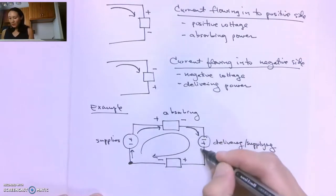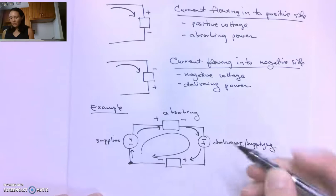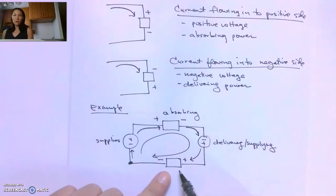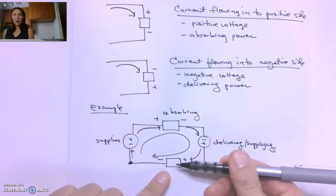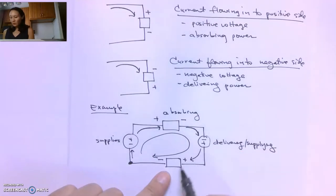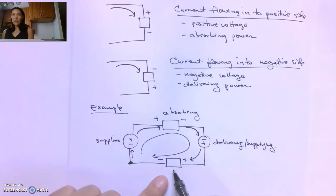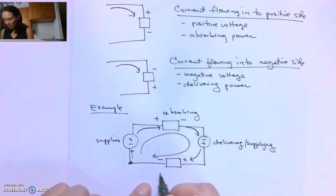Now as we continue on, the last circuit element we encounter in our loop is this one here. We're coming in to the positive side, so that means we're going to have a positive voltage, and this element is absorbing or dissipating power.